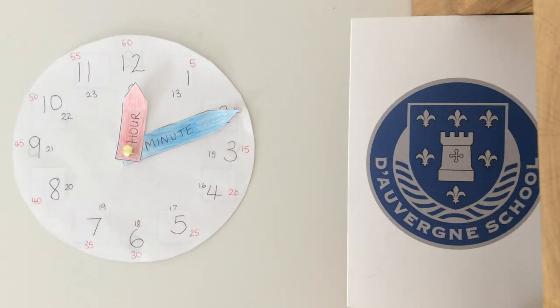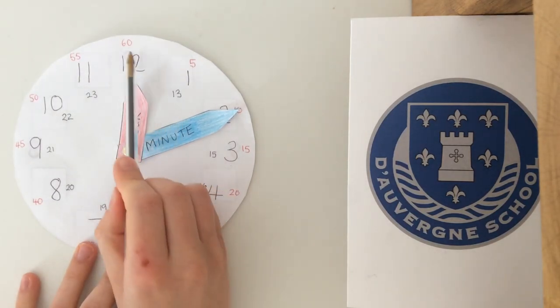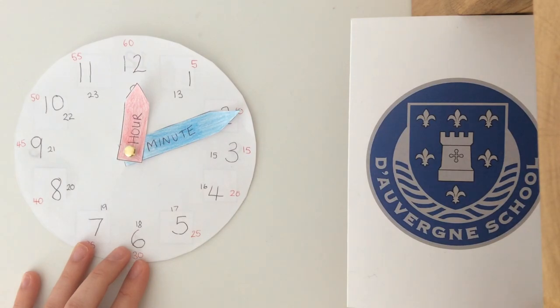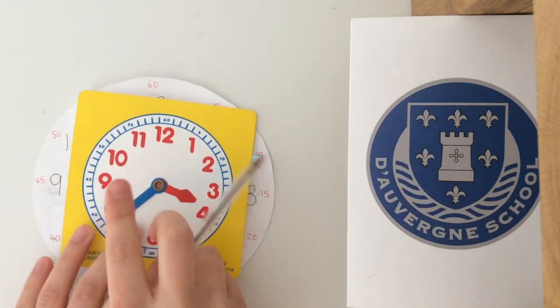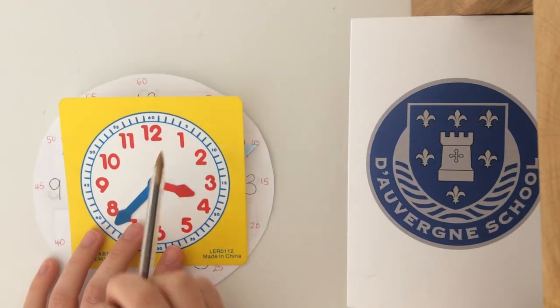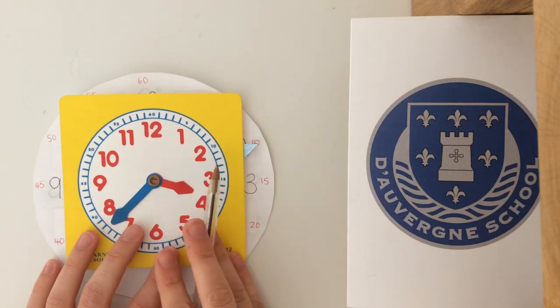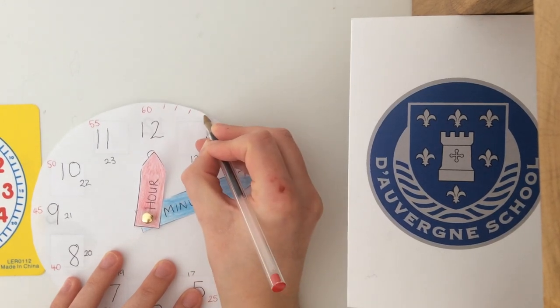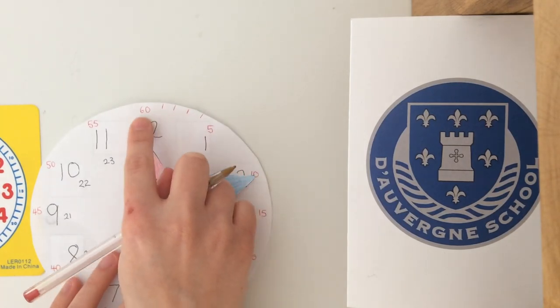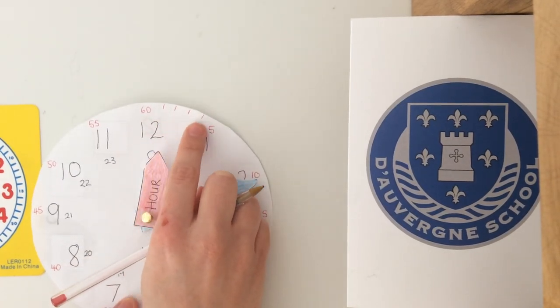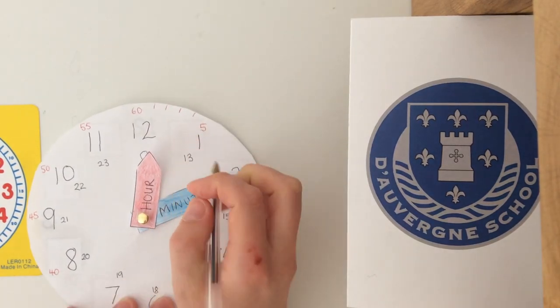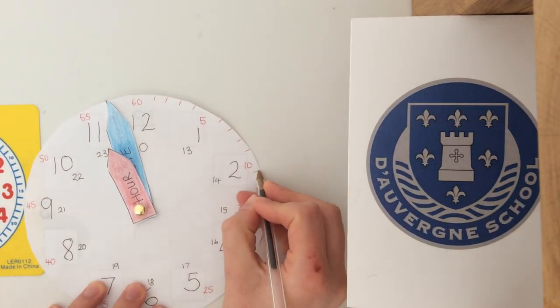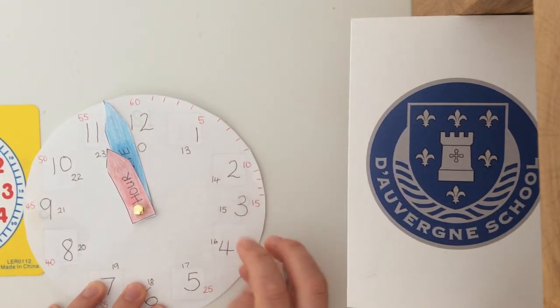Check that yours looks the same as mine. Last but not least, you may want to add four little lines in between your 5-minute markers. Why might we want to do that? What could these symbolize? Have a look here on my pre-made clock. What might these little lines symbolize in between our 5-minute markers? They symbolize one minute. So 1 minute, 2 minutes, 3 minutes, 4 minutes, 5 minutes.